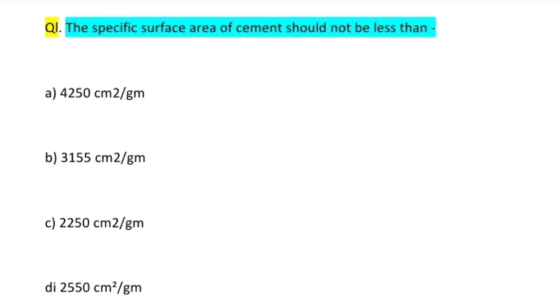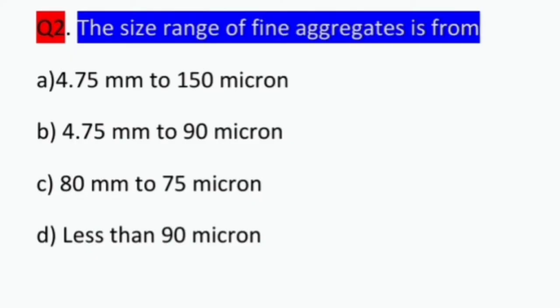And for PPC should not be less than 3000 cm² per gram. So in all of them we know that the least value for ordinary cement is here, so 2250. Answer will be 2250 cm² per gram.